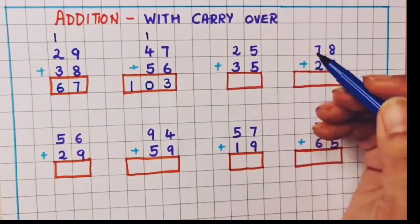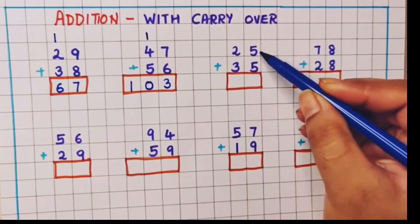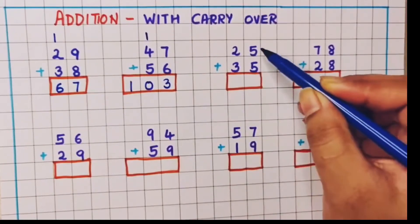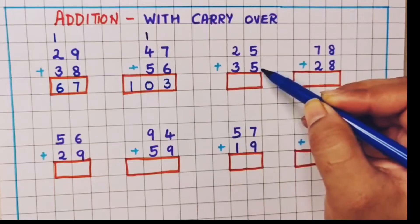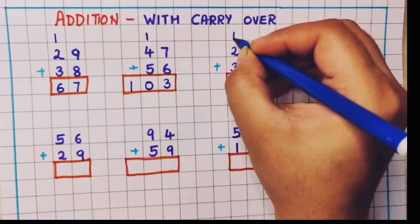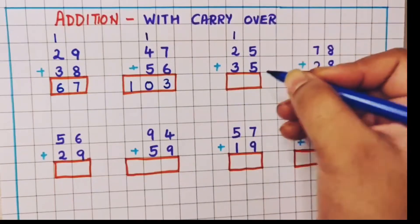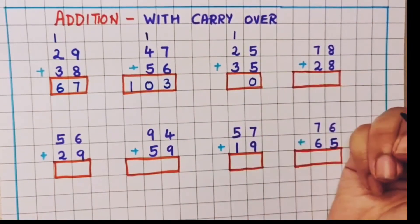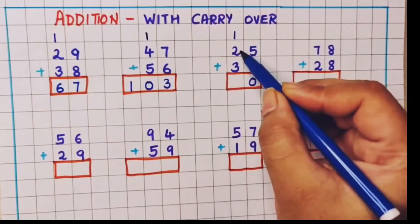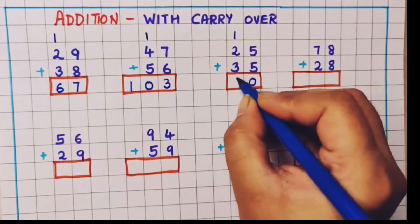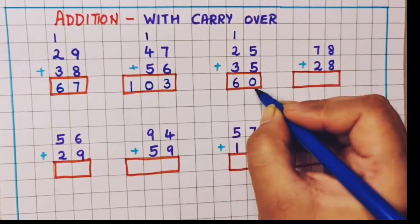Let's understand one more example: 25 plus 35. Now 5 plus 5 is 10. 10 is a two-digit number, so the 1 will go as a carry over to the tens place and 0 will come down. Now 1 plus 2 is 3 and 3 plus 3 is 6. So the answer is 60.